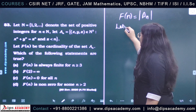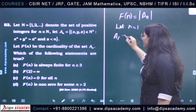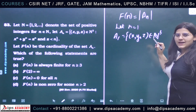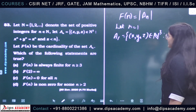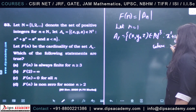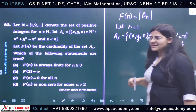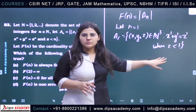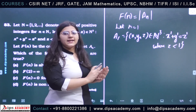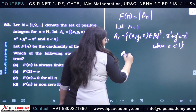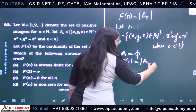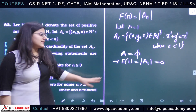Let us take n = 1. So A_1 is the set of (x, y, z) in N³ such that x¹ + y¹ = z¹, where z < 1 and z belongs to the natural numbers. Since z must be a natural number and z < 1, there does not exist any such z. Thus A_1 is the empty set, which implies f(1) = 0.